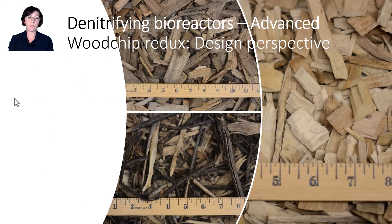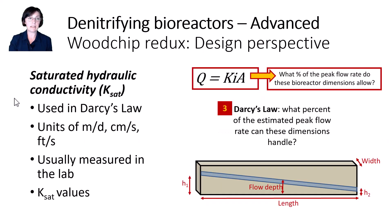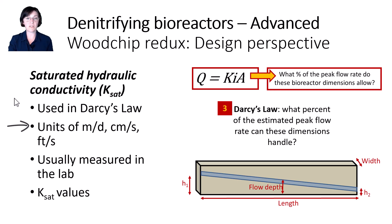Moving from woodchip porosity to woodchip saturated hydraulic conductivity. As we discussed previously, KSAT — saturated hydraulic conductivity — is the K used in Darcy's law, which is used as part of many of our design models. The units of KSAT are length per time because this is a 1D flow parameter.